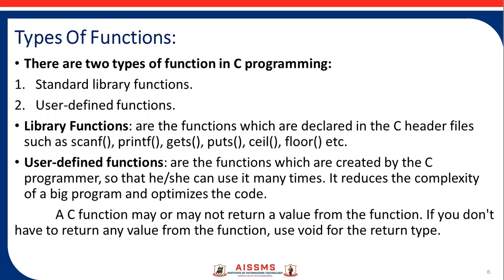Next is the types of functions. There are two types of functions in C programming. First is the standard library function and second is the user-defined function. Library functions are declared in C header files. User-defined functions are created by the C programmer so that he or she can use them many times.